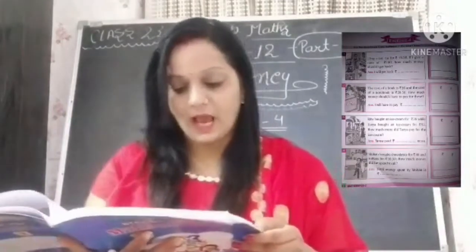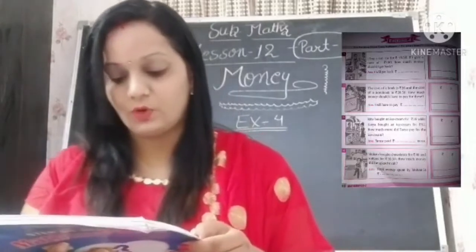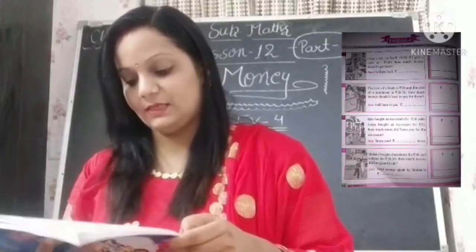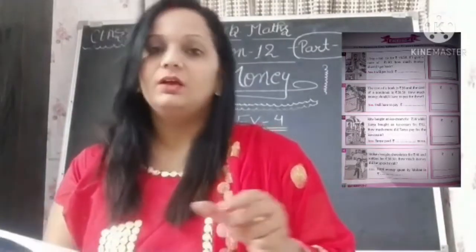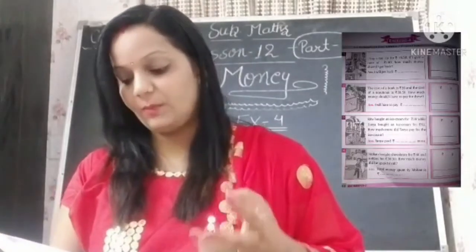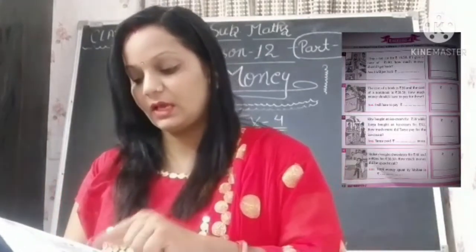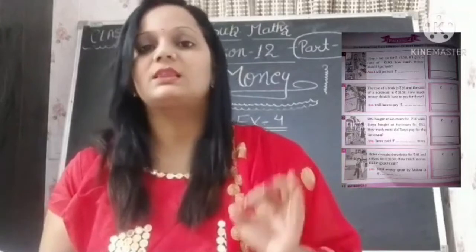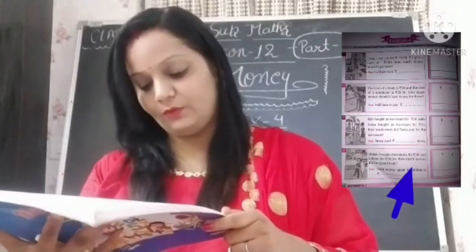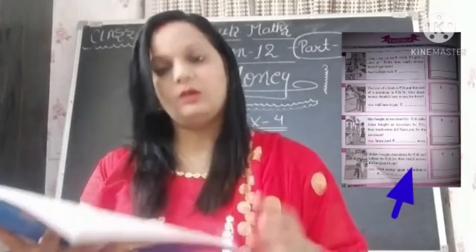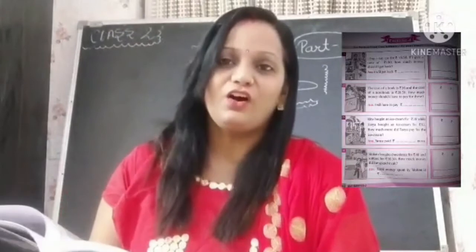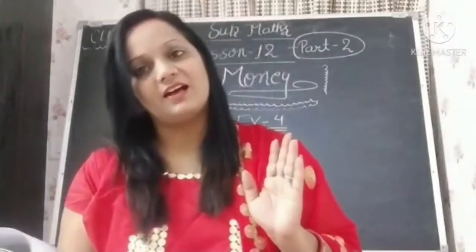Number 3: Ritu brought an ice cream for rupees 38, while Tanya brought an ice cream for rupees 52. How much more did Tanya pay for the ice cream? Ritu ne ice cream kharidi 38 rupees ki, Tanya ne kharidi 52 ki — toh Tanya ne kitne paise aur diye? Toh yahan pe hamen subtraction karna hai: 52 mein se 38 minus karna hai. Number 4: Mohan brought chocolate for rupees 48 and a top for 30.50. How much money did he spend in all? As usual, add karna hai.